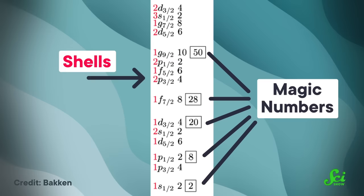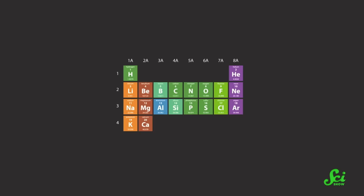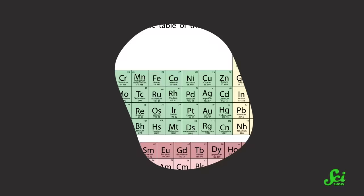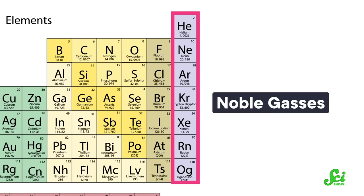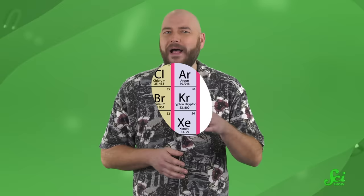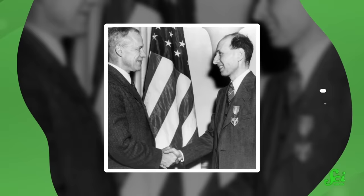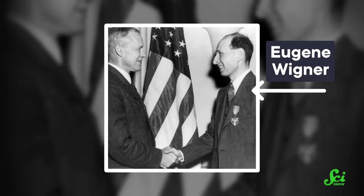This probably sounds familiar because something very similar happens with electrons. Chemistry textbooks describe electrons as orbiting the nucleus in shells, and when the outermost shell is full, the element is less reactive — giving us the noble gases on the far right of the periodic table, which are inert because they have full outer electron shells. But while electron shells were accepted by the time Goeppert Mayer proposed her nuclear shell model, many physicists were reluctant. They were using the liquid-drop model, which suggests a nucleus is basically a blob of protons and neutrons. One physicist, Eugene Wigner, was particularly skeptical, but he couldn't deny the patterns she'd discovered — so he called the stability numbers magic numbers, because the liquid-drop model couldn't explain them.